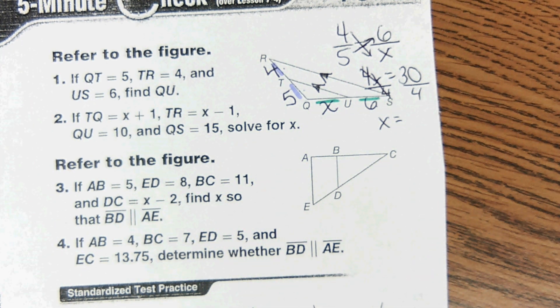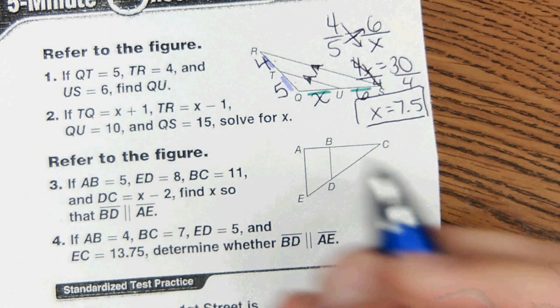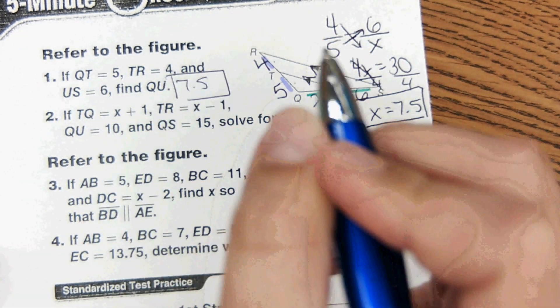Thirty divided by four is seven point five, so x equals seven point five and that is the answer.